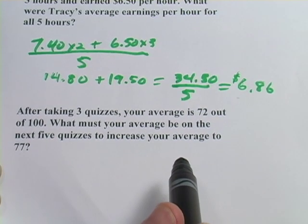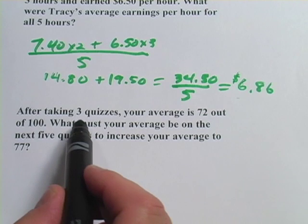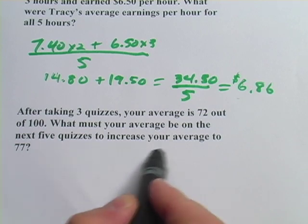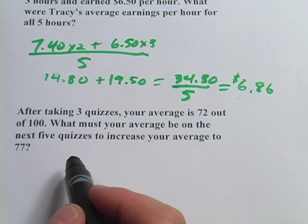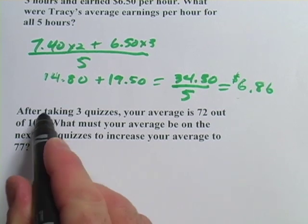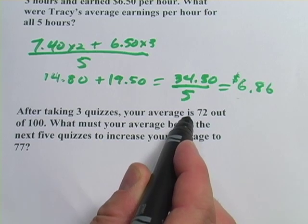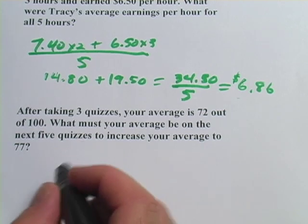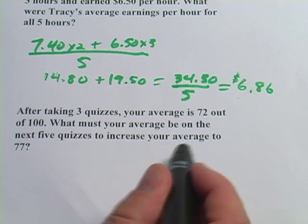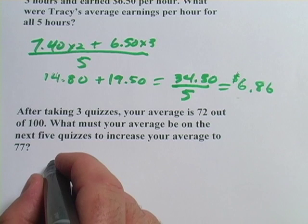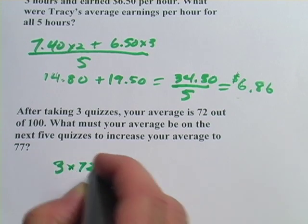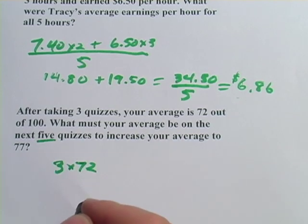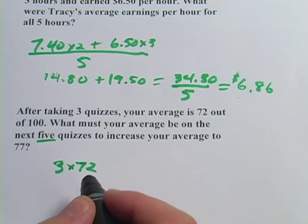One more here — another one with quiz scores. It says: after taking three quizzes, your average is 72 out of 100. What must your average be on the next five quizzes to increase your average to 77? This is a little bit different. The first chunk is three quizzes where the average was 72. We don't know what this person actually got on those quizzes, but we could say 72 plus 72 plus 72, or use the shortcut and write 3 times 72. The second chunk is five quizzes, so our total is going to be eight.